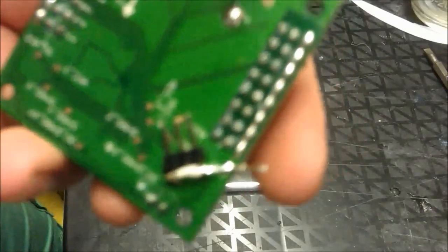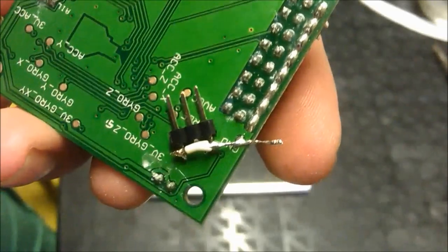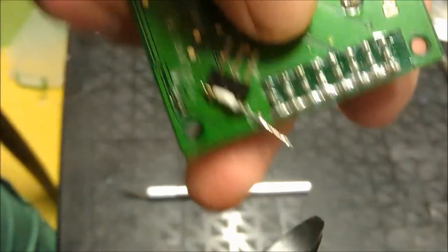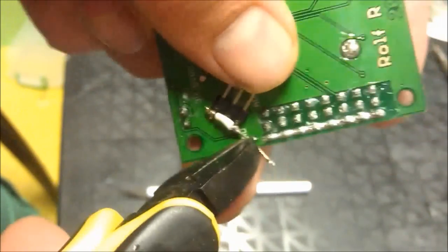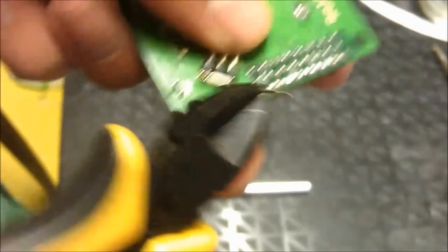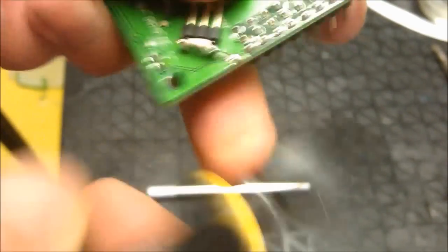Then all you need is your trusty side cutters. Zoom in on it. I've got it nicely in focus. These are nice. These are actually just Hobby King ones. They're like a dollar. They're cheaper than any that I can buy here and their quality is actually way better.